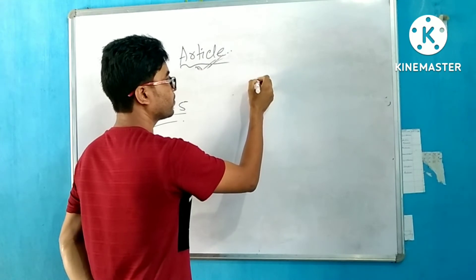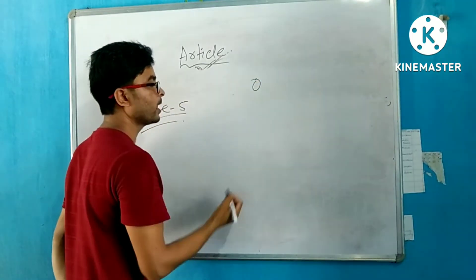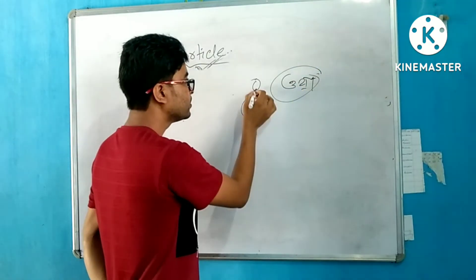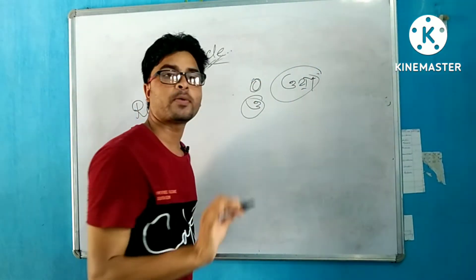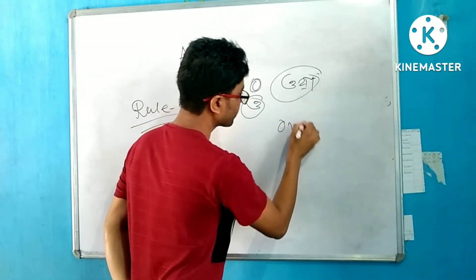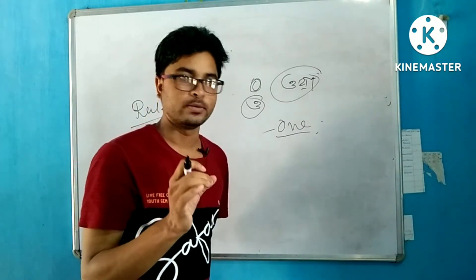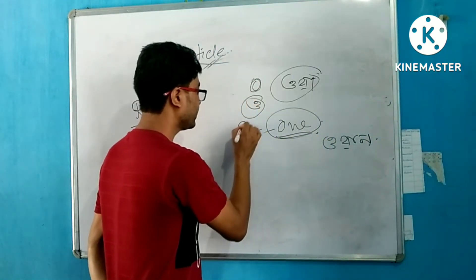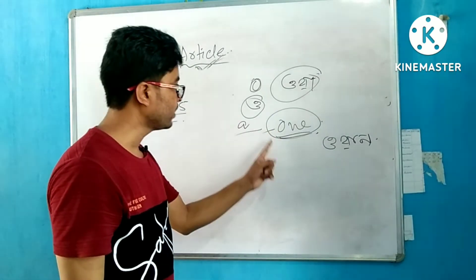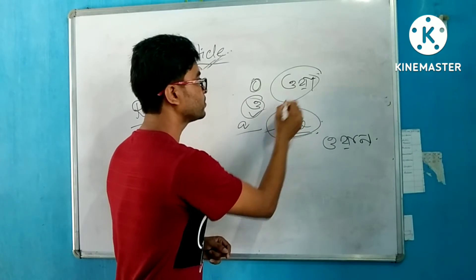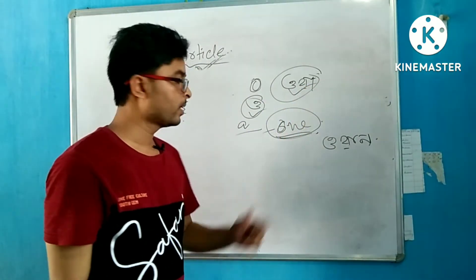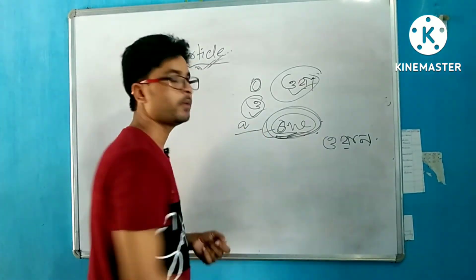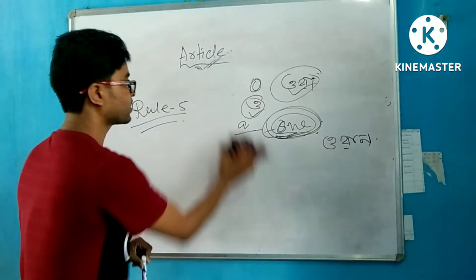Rule five: Words starting with 'one'. Although O is a vowel, 'one' is pronounced with a 'w' sound at the beginning, which is a consonant sound. Therefore, we use A article: a one-way street.